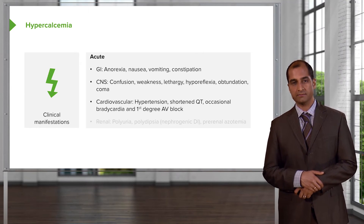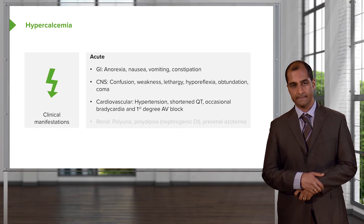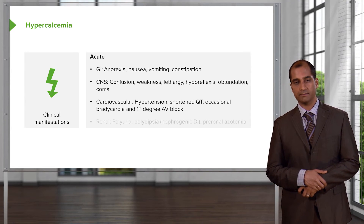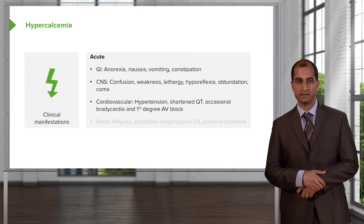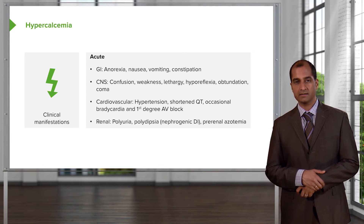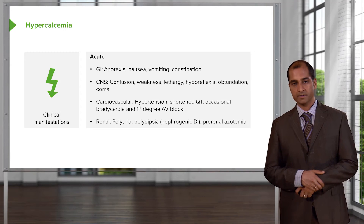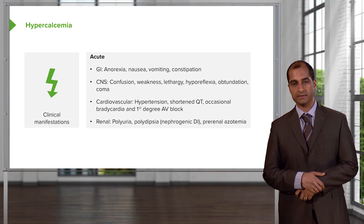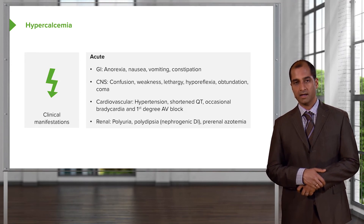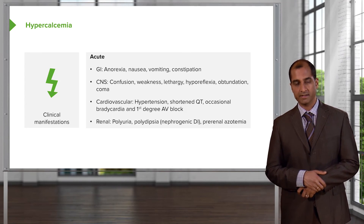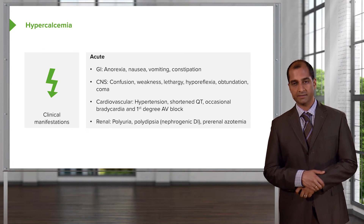Cardiovascular manifestations include hypertension and a shortened QT interval — not lengthened. You may see occasional bradycardia, perhaps first-degree AV block, and you're looking for prolonged PR interval. In the kidney, hypercalcemia may be associated with polyuria and polydipsia, especially if thinking about nephrogenic diabetes insipidus, and may result in prerenal azotemia and decreased filtration.